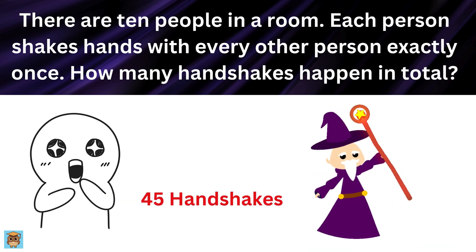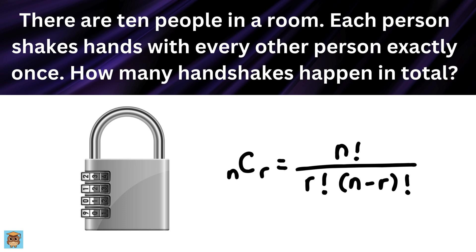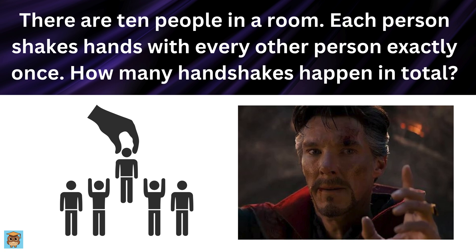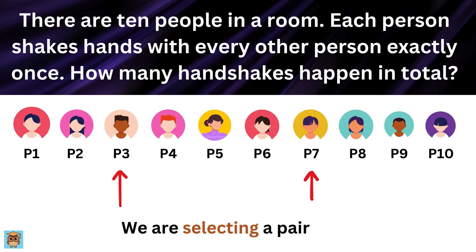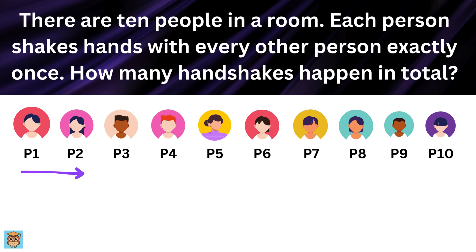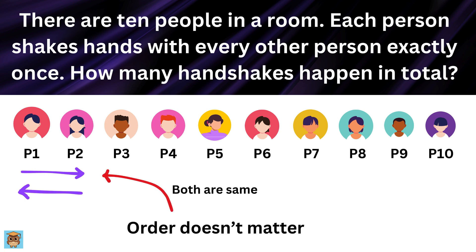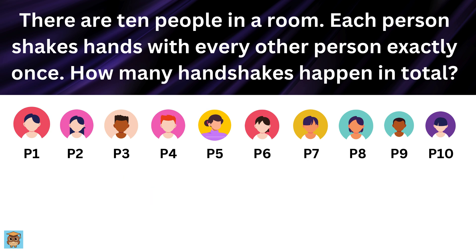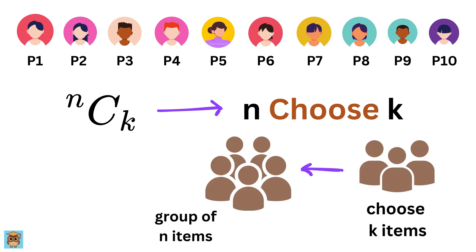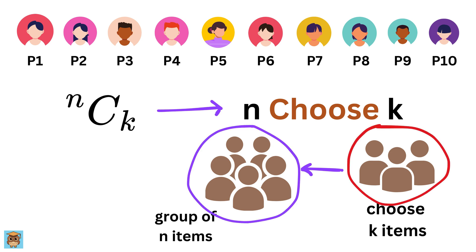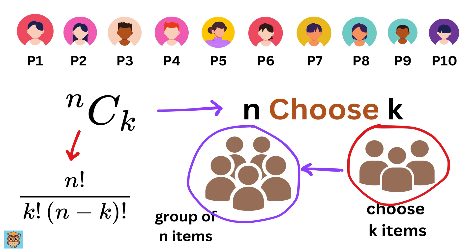Amazing! Now here comes the magic. As I mentioned, this problem is actually a classic example of a combination. A combination is a way of selecting items from a group where the order doesn't matter. In this case, we are selecting pairs of people to shake hands. It doesn't matter if we say Person 1 shakes hands with Person 2, or Person 2 shakes hands with Person 1 — it's the same handshake. In math, combinations are written as N choose K, which tells us how many ways we can choose K items from a group of N items. The general formula is N factorial divided by the product of K factorial and N minus K factorial.